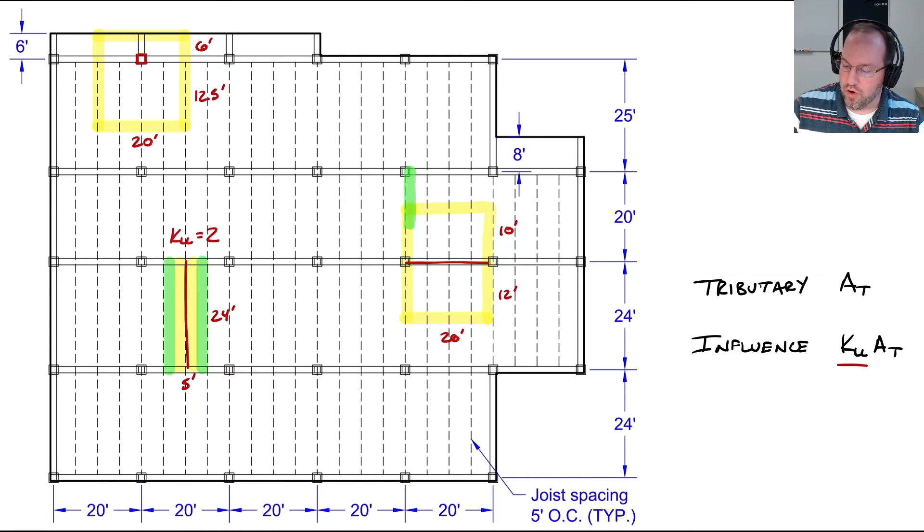The same thing will happen with our girder. Our influence area is going to be defined by this total area encompassed by the two north and south slabs to that girder, and therefore once again our influence area is twice that of the tributary area, so K_LL of two.